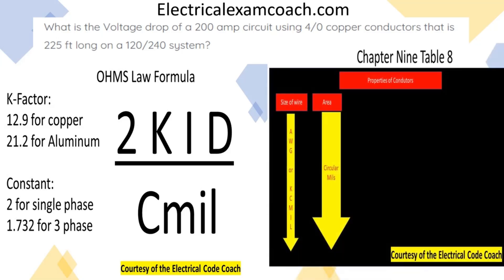In order to get that information, we're going to head over to Chapter 9, Table 8. We're going to start on the left-hand side until we find our conductor. Then we're going to come over and we're going to get our C-mills.